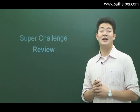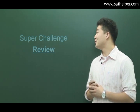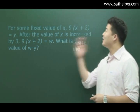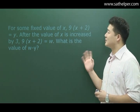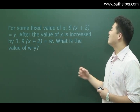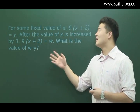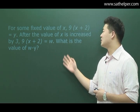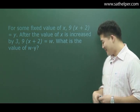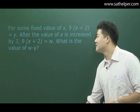So, let's actually do the super challenge review we did from Lecture 2. So, in this problem that we talked about where it says, some fixed value of x, 9(x+2) equals y. After the value of x is increased by 3, 9 times (x+2) equals w. So, what is the value of w minus y? So, how'd you all do? Alright, let's see if you guys got the right answer.